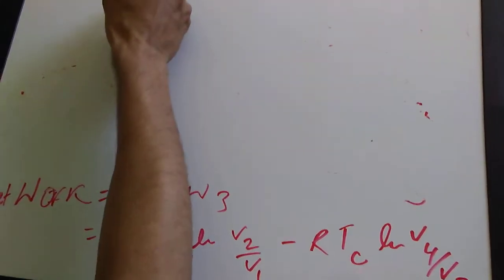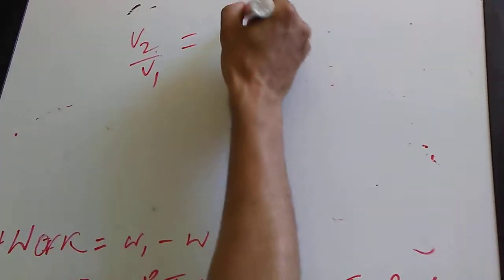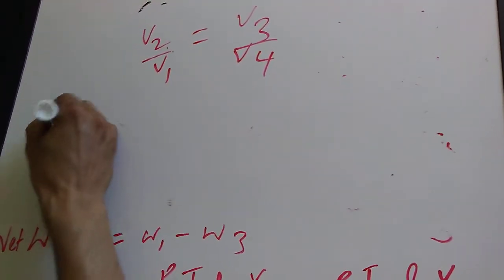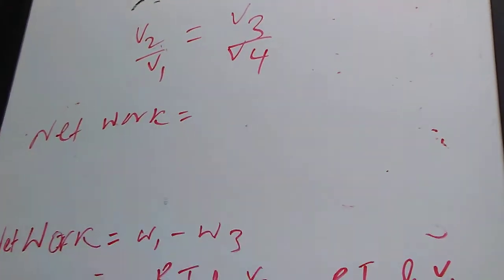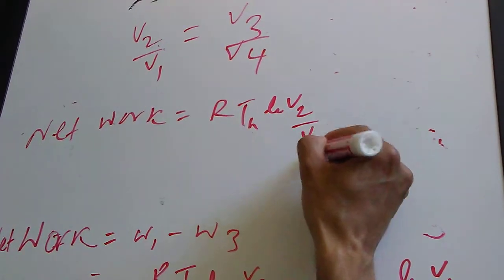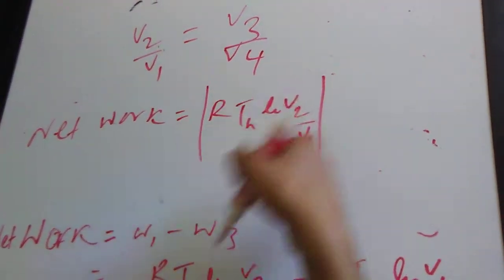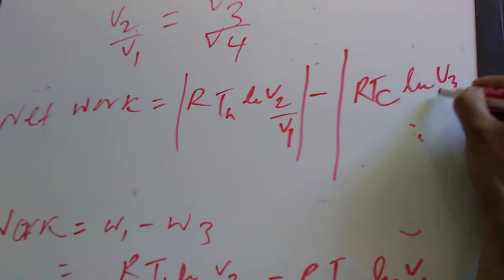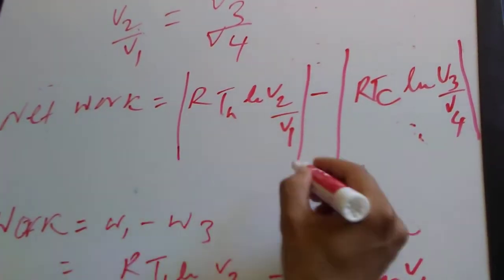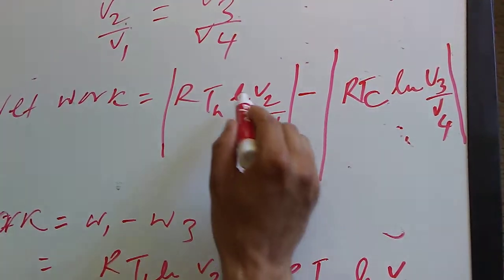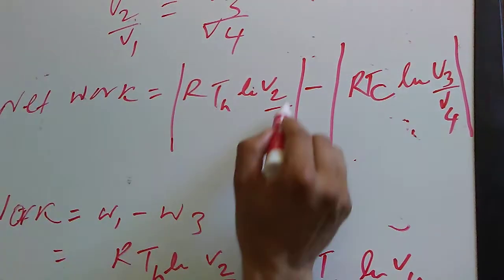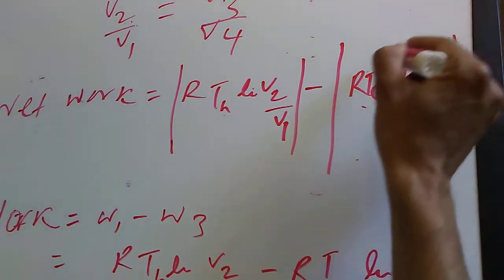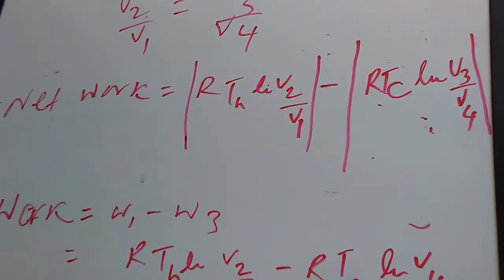One important property of the Carnot cycle is that V2/V1 always equals V3/V4. Using this, we can simplify: net work = |R·TH·ln(V2/V1)| − |R·TC·ln(V3/V4)|. The absolute value signs ensure that any negative signs from the logarithm calculation are removed. For example, if you get 500 J from the first term and 200 J from the second, the net work is 300 J.